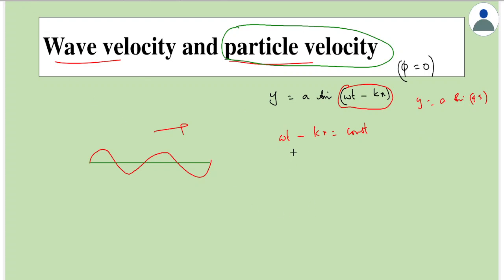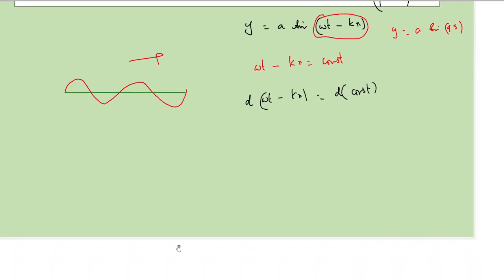Differentiating this, what we get is omega t minus kx is equal to... differentiating a constant. From here, if you open the brackets, the general differentiation, if it's confusing you can take with time t also, the idea is the same.